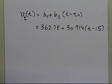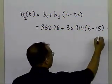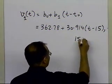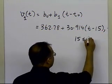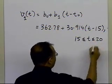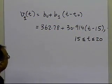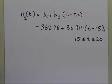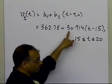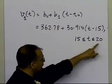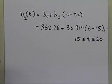This first-order polynomial is valid between 15 and 20. I want to emphasize that whenever you write interpolants using any method, you should specify the valid domain. Since we used data points at 15 and 20, this interpolant is valid for 15 ≤ t ≤ 20.